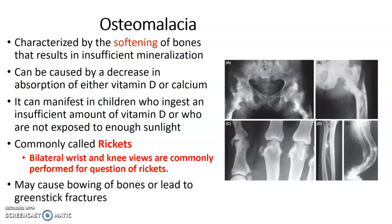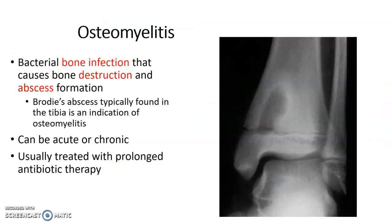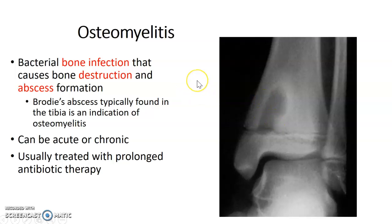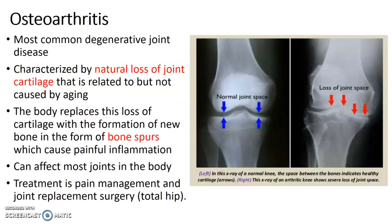Osteomalacia may cause bowing of bones or lead to greenstick fractures as well. Osteomyelitis is a bone infection that causes destruction and abscess formation, as you can see in this circled area. Brody's abscess is typically found in the tibia as an indication of osteomyelitis. It can be acute or chronic and is usually treated with prolonged antibiotic therapy.